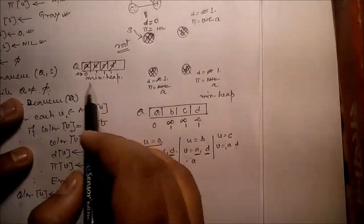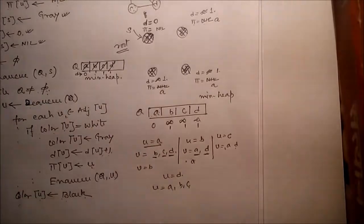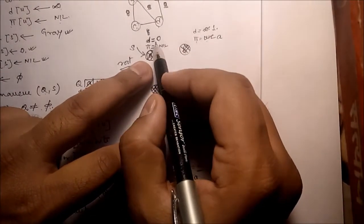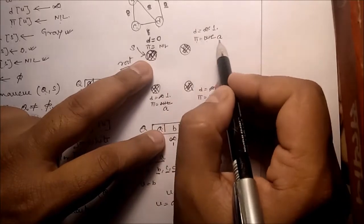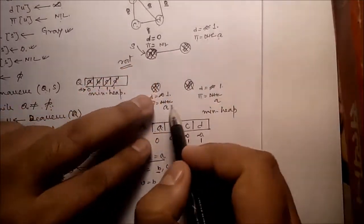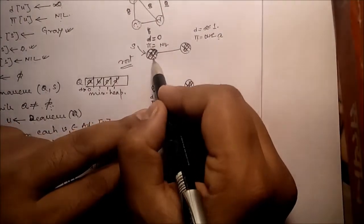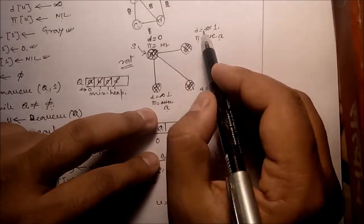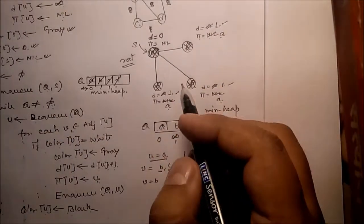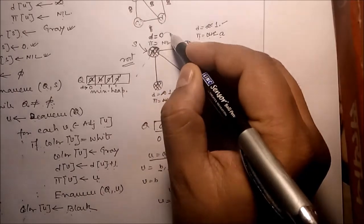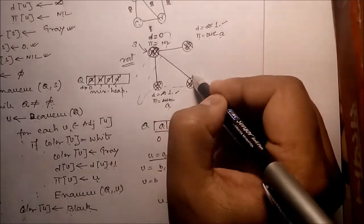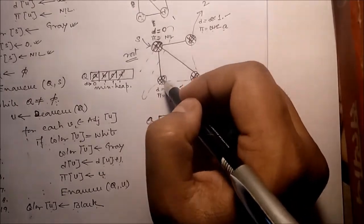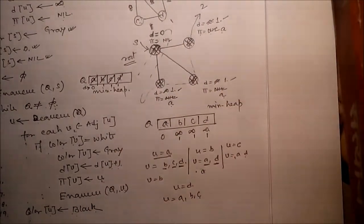Now Q not equal to phi — condition is false. Come out of the while loop. Looking at the resulting figure: A has distance 0 and pi equals nil, so it is the root. B, C, D each have distance 1 and parent A. This is breadth first search: first stage search A, second stage search B, C, D. That is breadth first search and that is the end of this particular video.